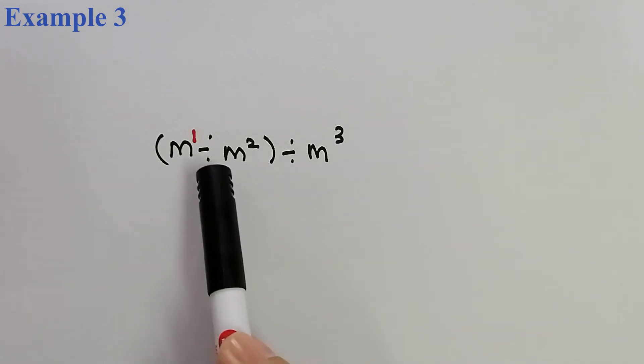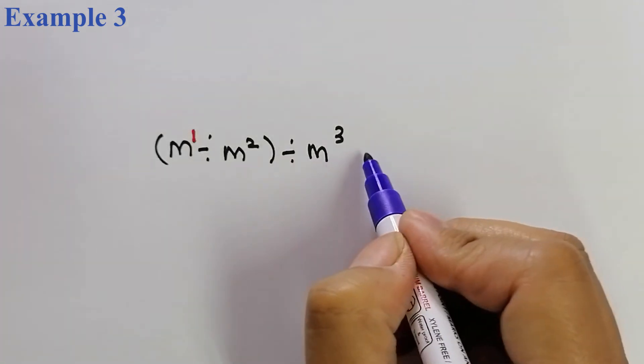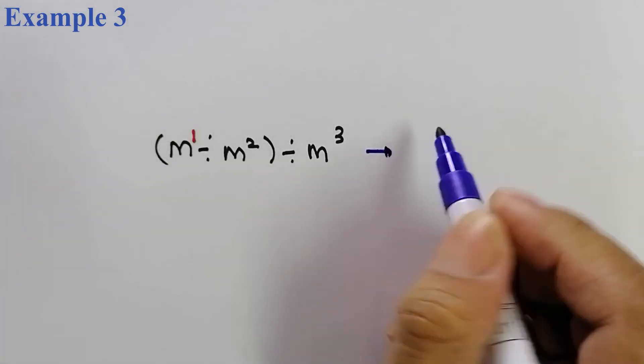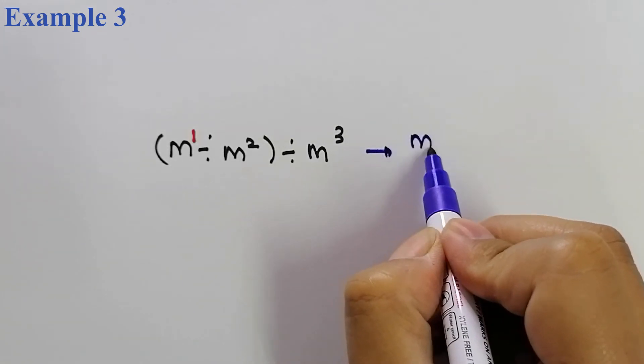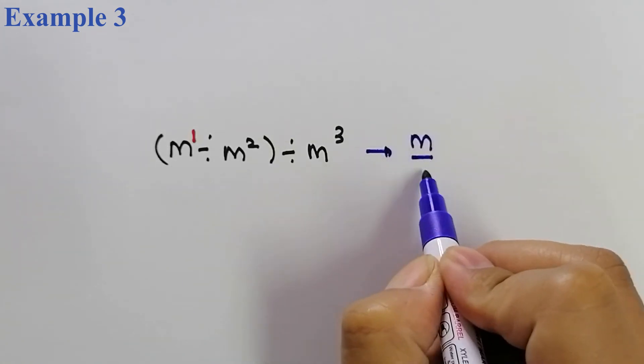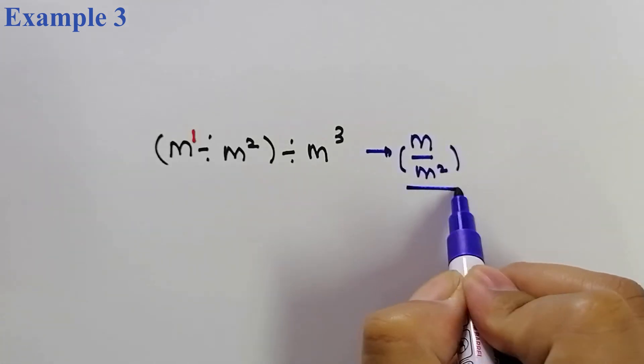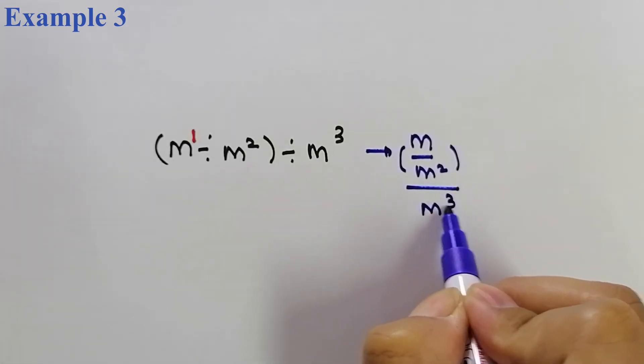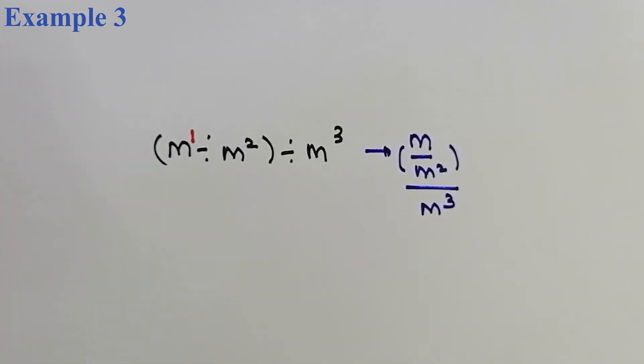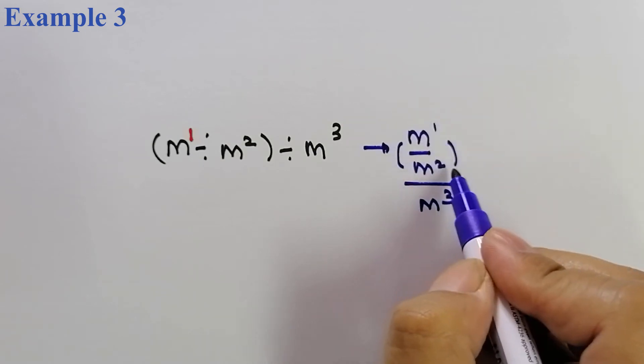Ini adalah division. Kalau kita nak tukar bentuk A ini ke dalam bentuk this one, kita boleh, contohnya, tukar bentuk dia kepada M divided by M power of 2. Kita dividekan lagi dengan M power of 3. Benda yang sama.